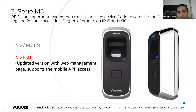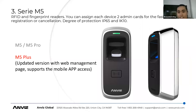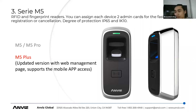When you swipe the first admin card (the enroll card), you can then press the fingerprint sensor or swipe a user card to add a user. The user can then press their finger or swipe a card to open the door. The updated M5 Plus also supports the web management page, where you can add or delete users or check records directly. You don't have to download any software. The M5 Plus also supports our mobile application.